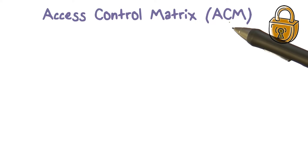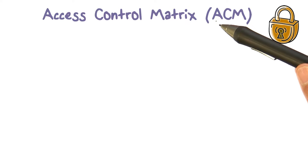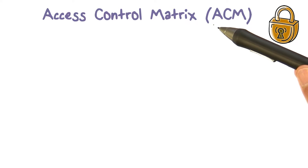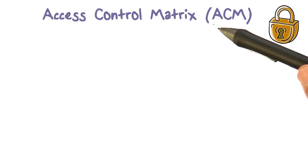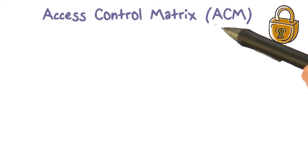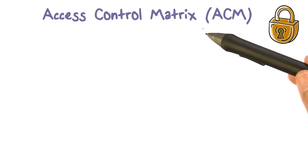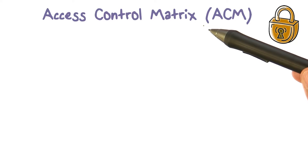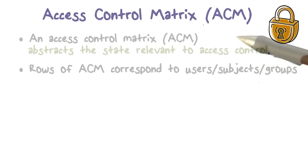There are two parts: we have to define our access control policy and then we have to do enforcement based on what is in that policy. That policy defines who can access what. We're going to abstract that information in a data structure called an access control matrix, or an ACM.